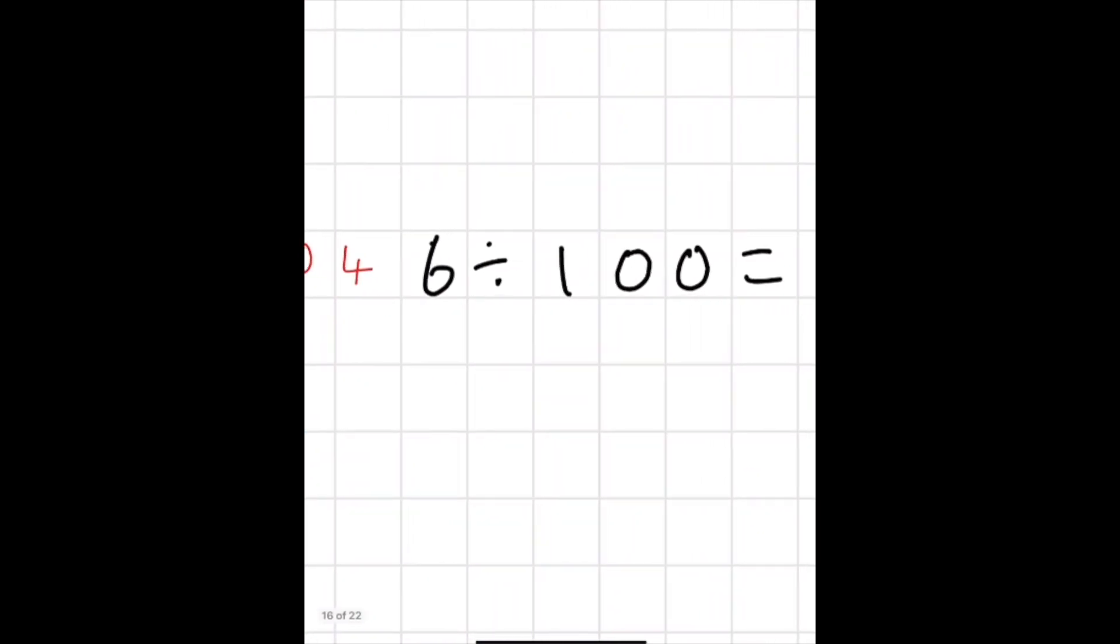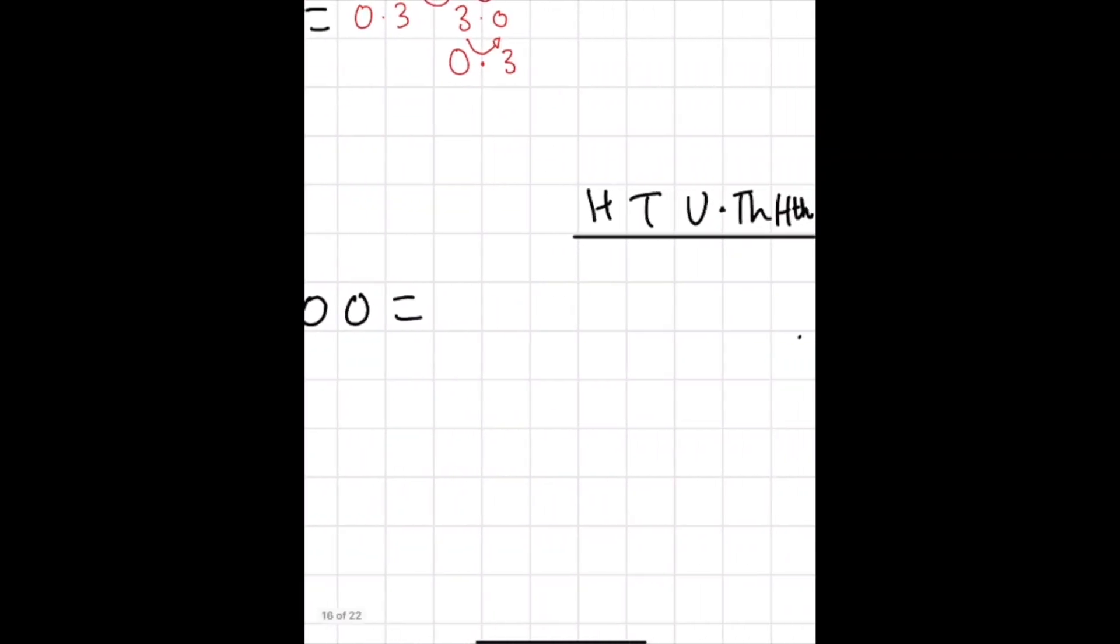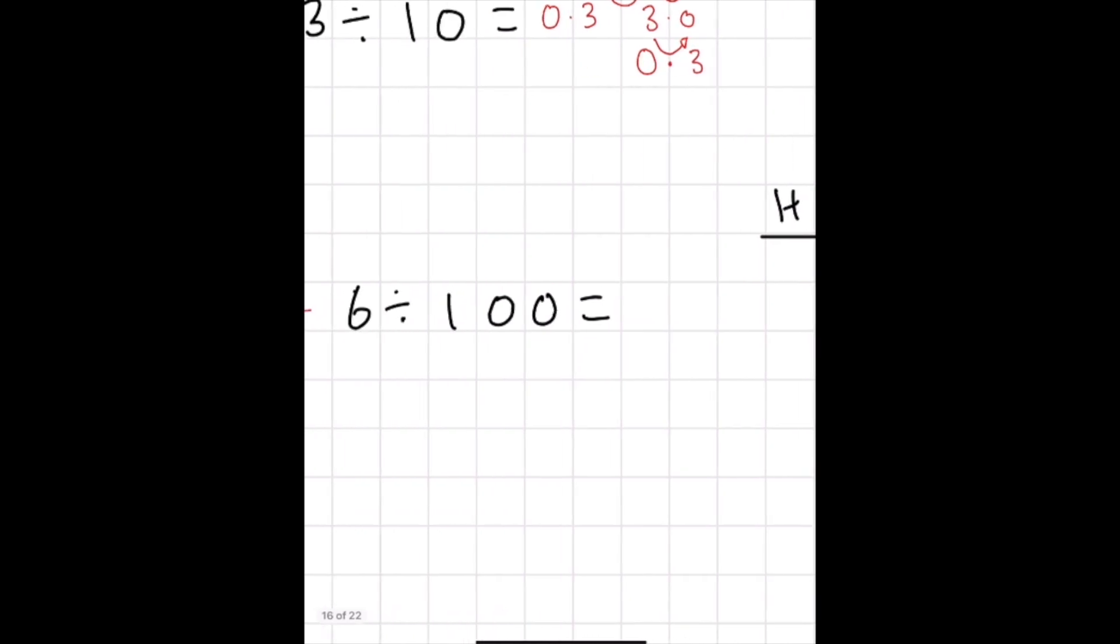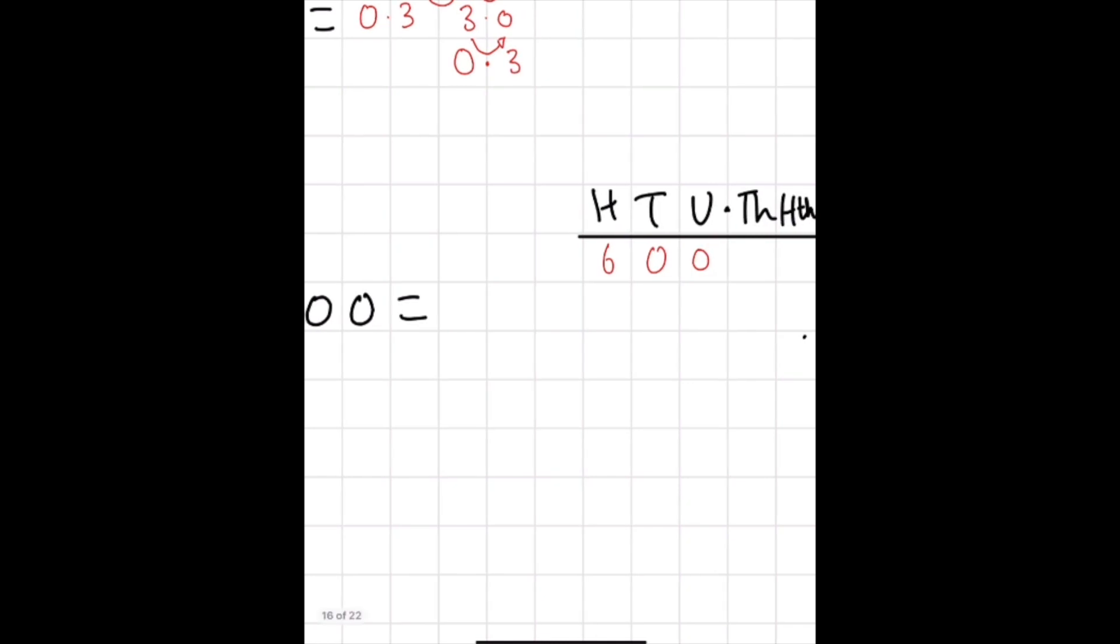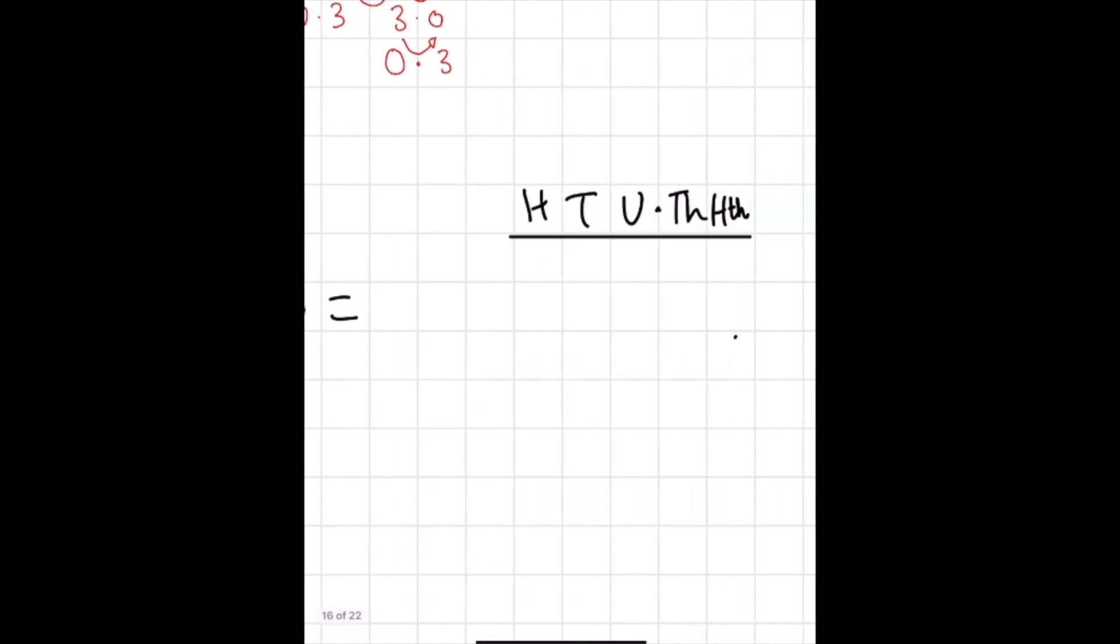So again we are able to use our place value chart to divide by 100. If our number is 600 we know that we move two spaces down for 100. It's one for ten and two for 100. So 600 divided by 100 would be six. But again we are looking at one digit numbers this time. So if we are dividing six by 100 our six would go in the units column and it would move down two places. So it would be zero point zero six.